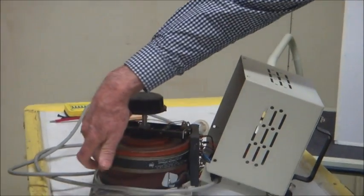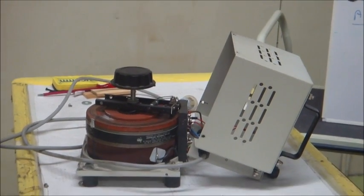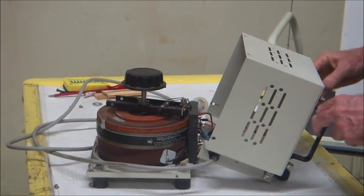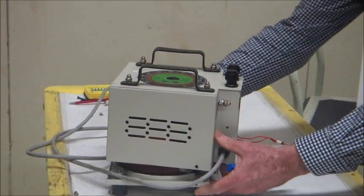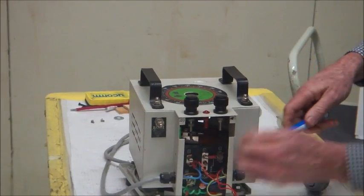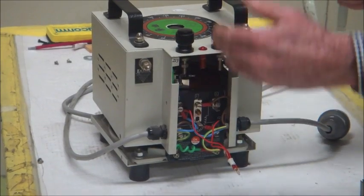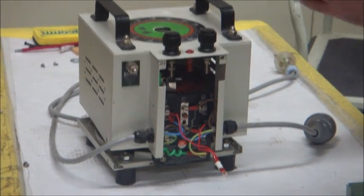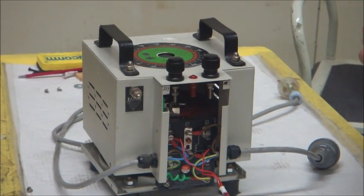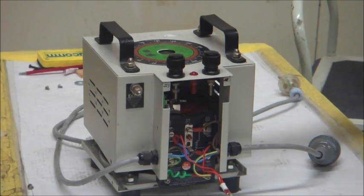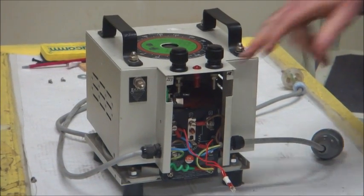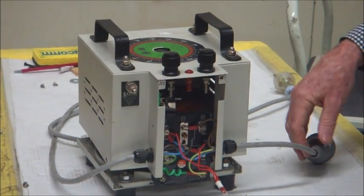This is the toroidal transformer. So this is a single phase variac and this is what it looks like. It has various connections on the inside where you can actually change the maximum voltage depending on what your input voltage is. If it's 220 or 230 or 240, you can adjust and change the taps on the input side when you set it up.